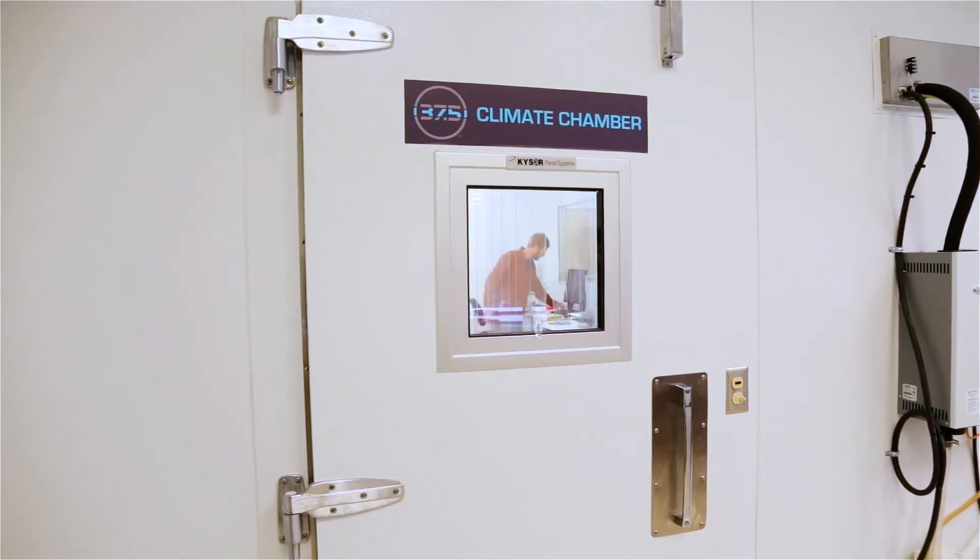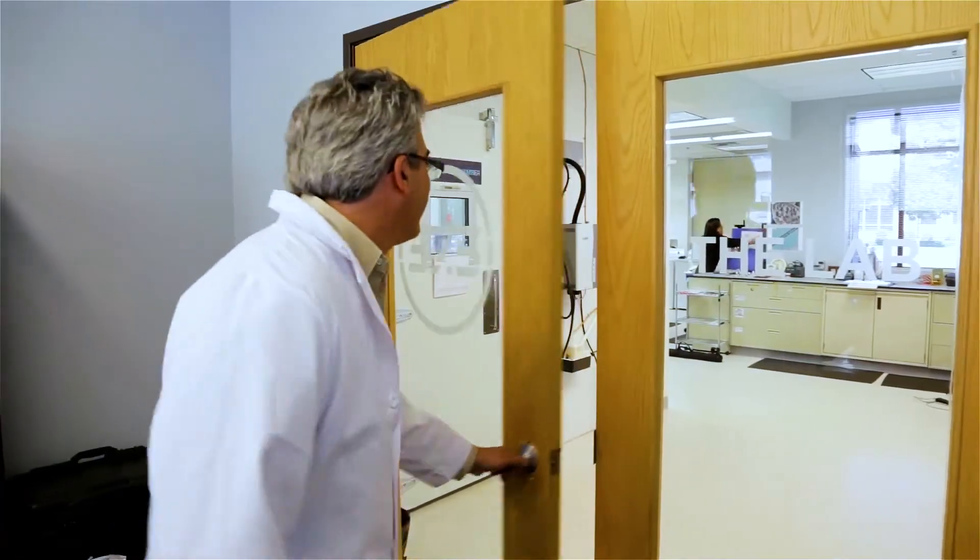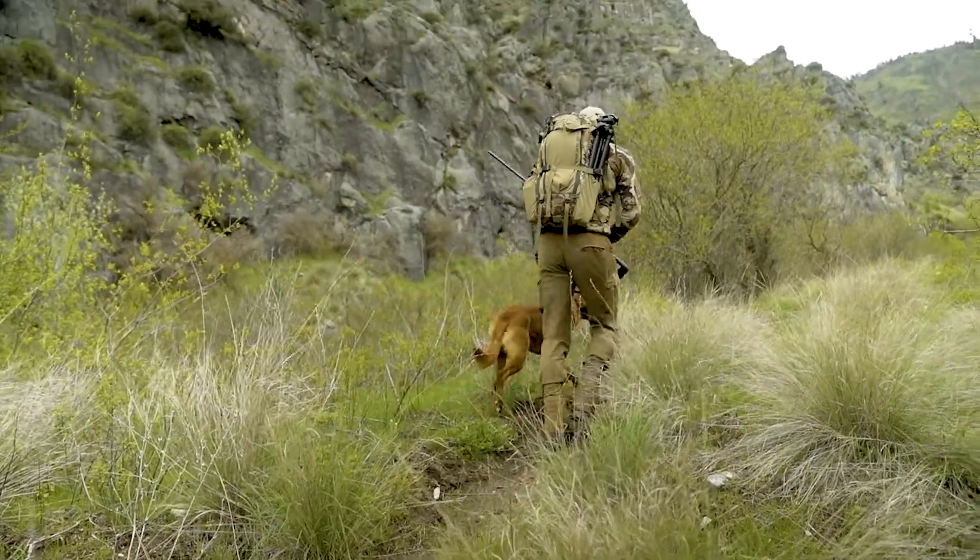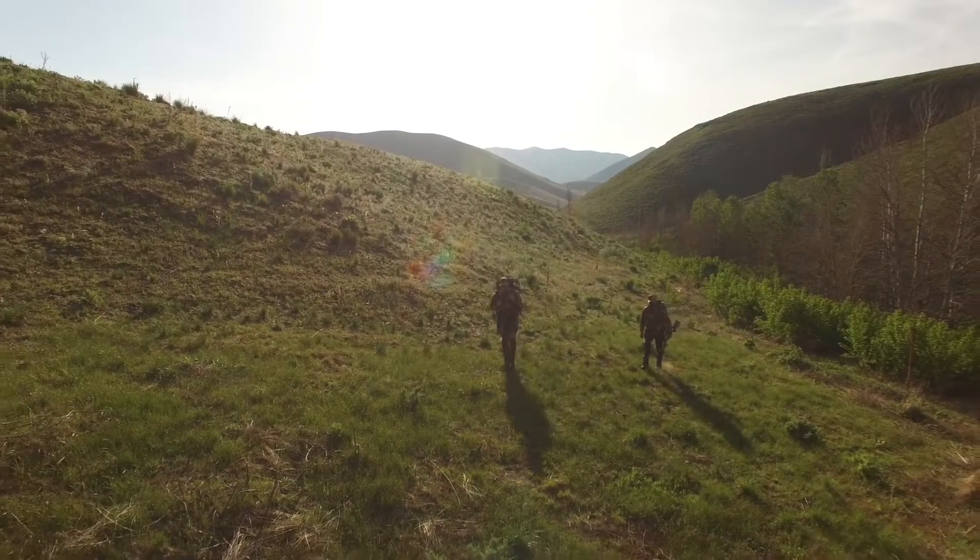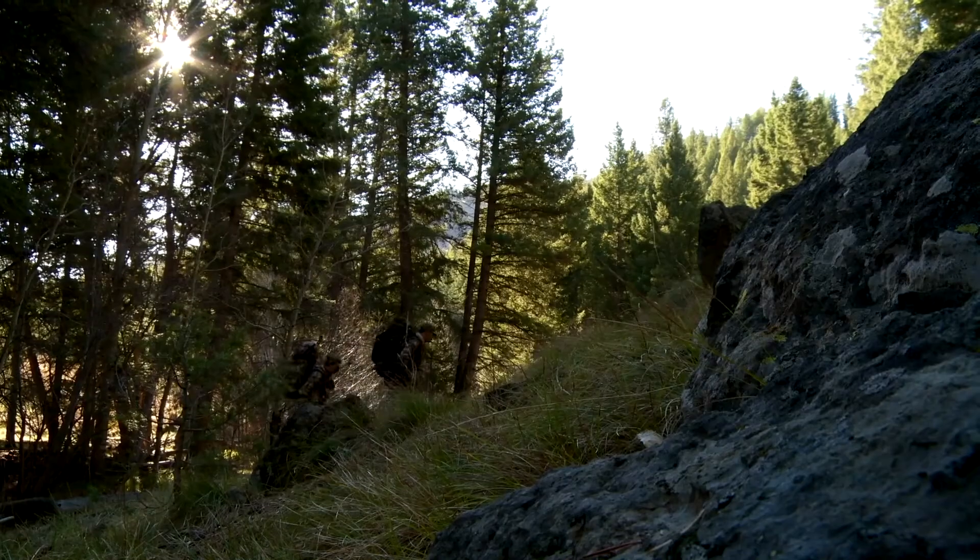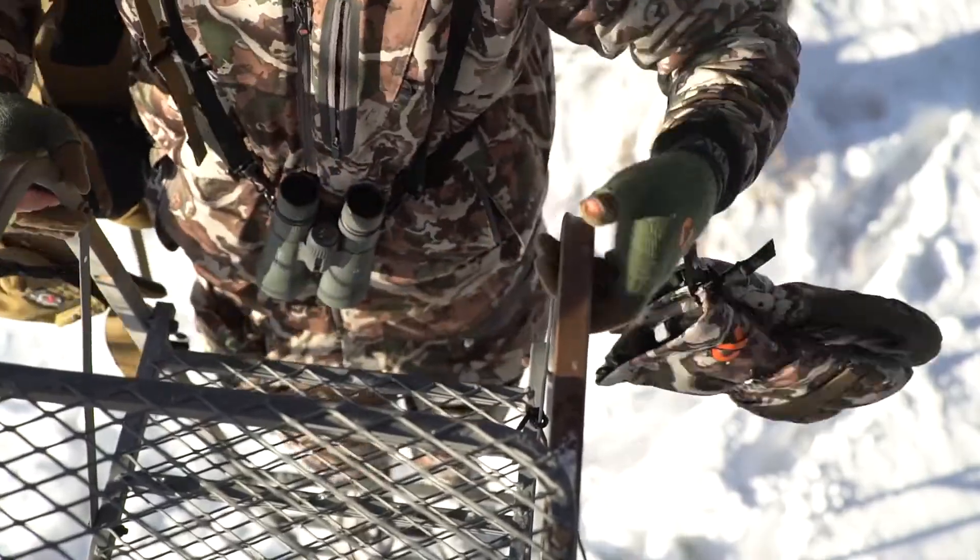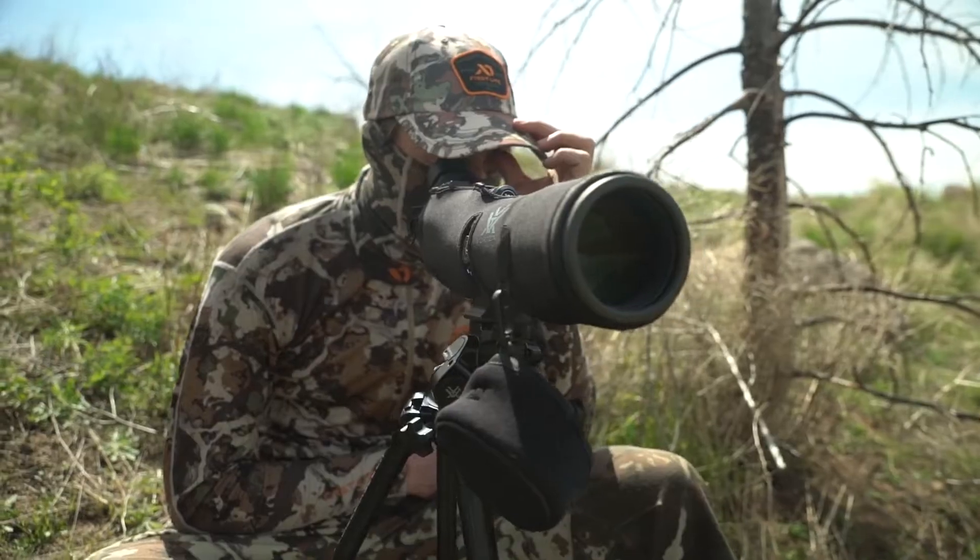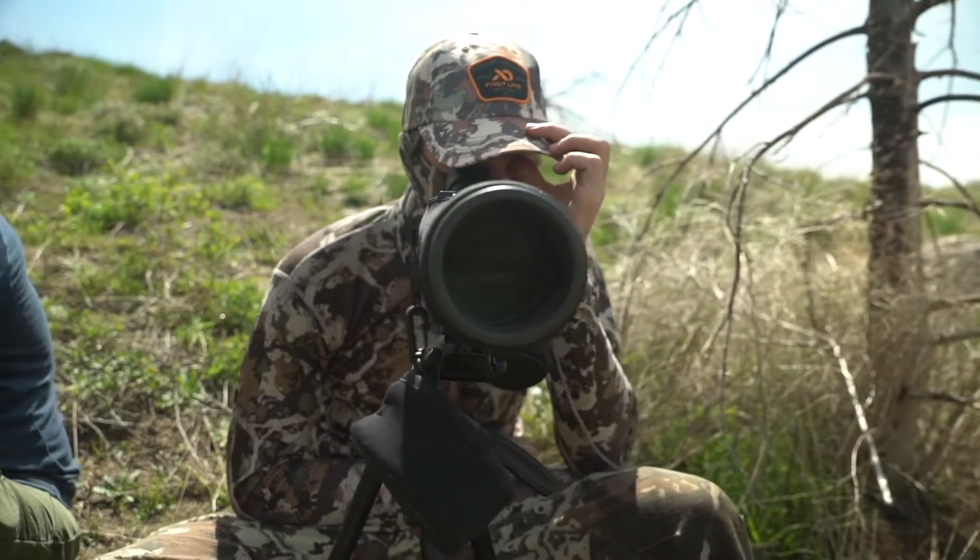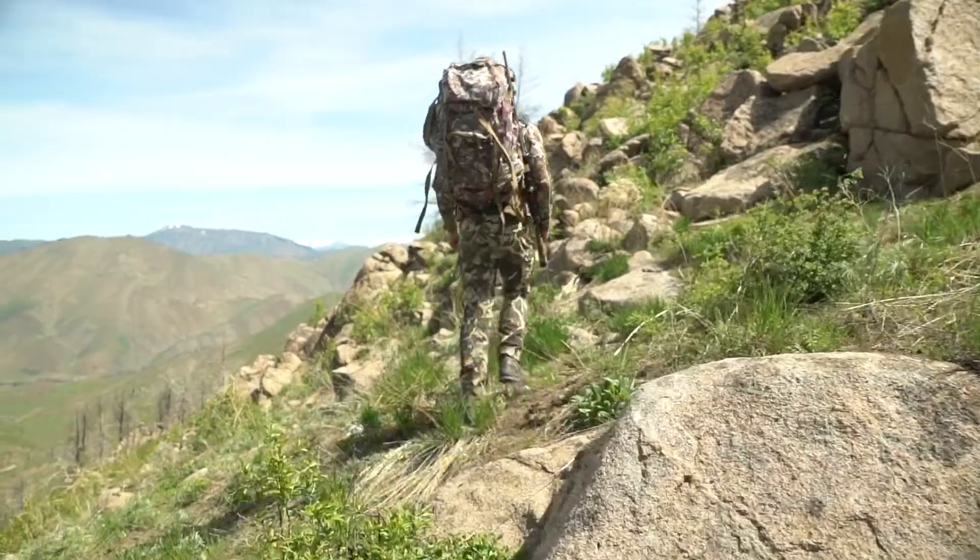You may have noticed that First Light utilizes something called 37.5 technology in a big portion of their hunting system. 37.5 is simply the best performing technology in the outdoor world for anyone who requires waterproof but extremely breathable outerwear, insulation that does more than just absorb your sweat, and base layers that move moisture to the surface before you become drenched in your own perspiration.